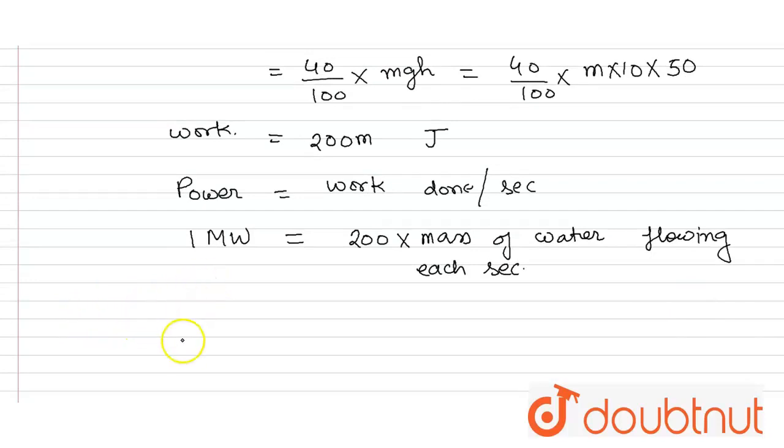1 megawatt is 10 to the power 6 watts, which will be equal to 200 times mass.